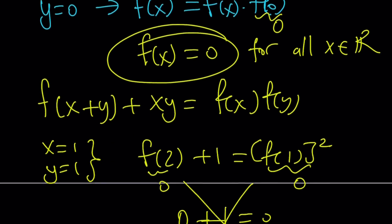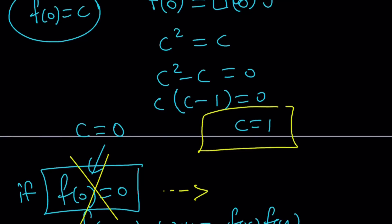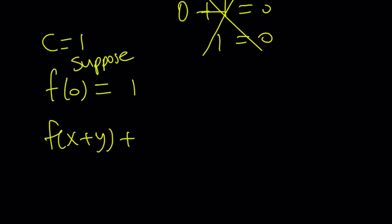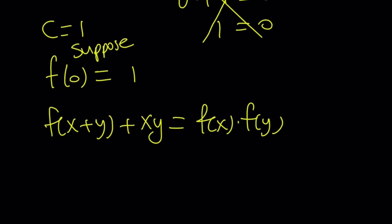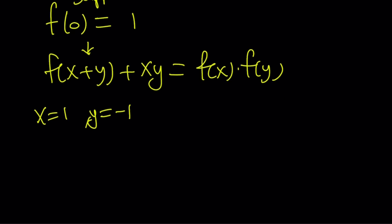So the other option: we said f of 0 is either 0 or 1. Since the first option failed, we use the second — c equals 1, meaning f of 0 equals 1. Let's proceed. Suppose f of 0 equals 1. Let's rewrite the equation and replace x with 1 and y with negative 1. When you replace x and y with opposite values, you get f of 0 minus 1 equals f of 1 times f of negative 1.